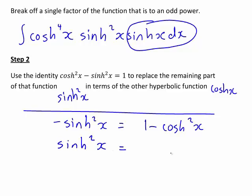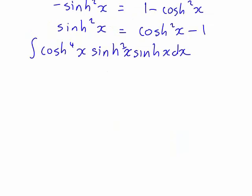So that therefore, this part here, this sinh²(x) part of the integrand is going to be rewritten as cosh²(x) minus 1.